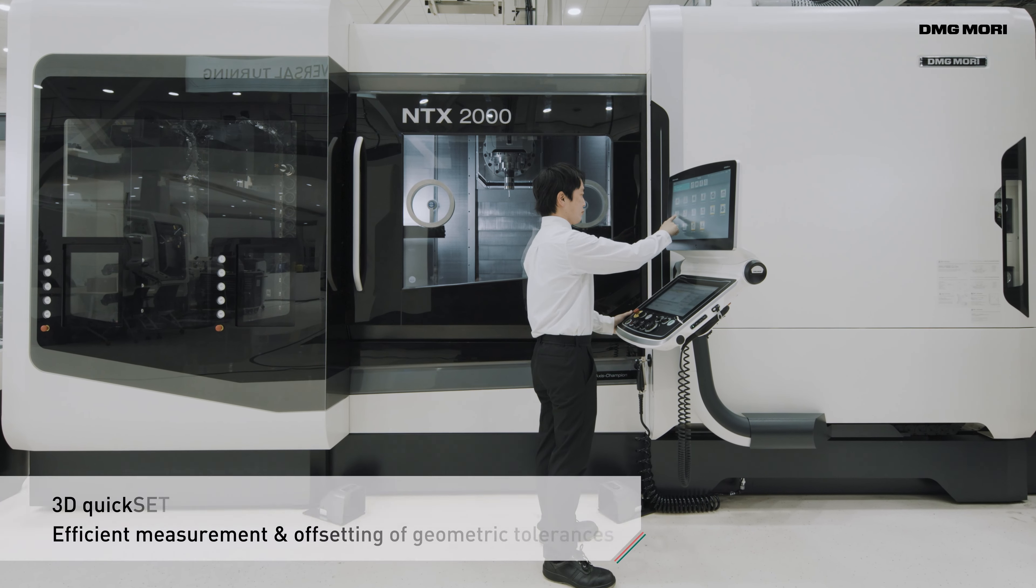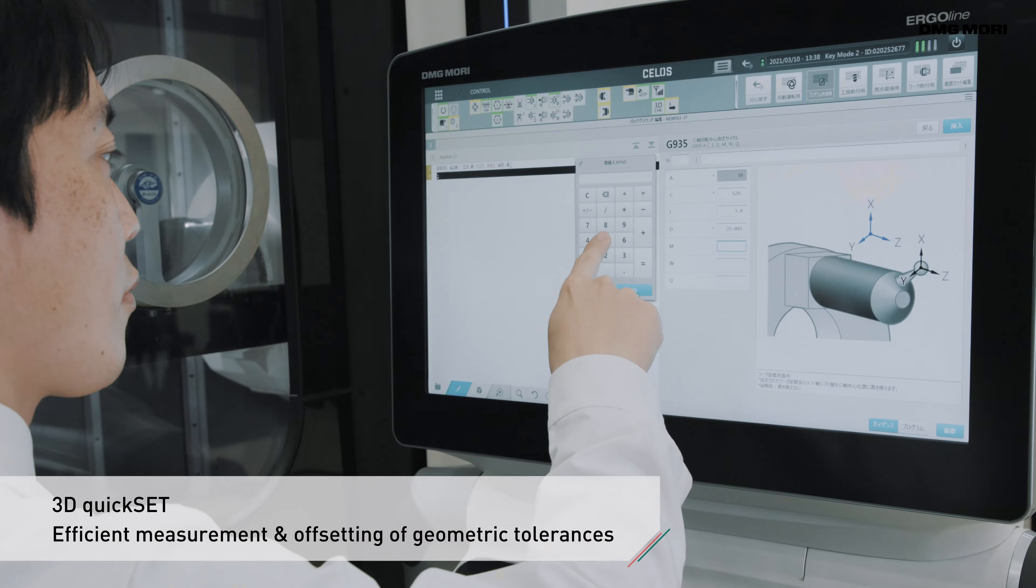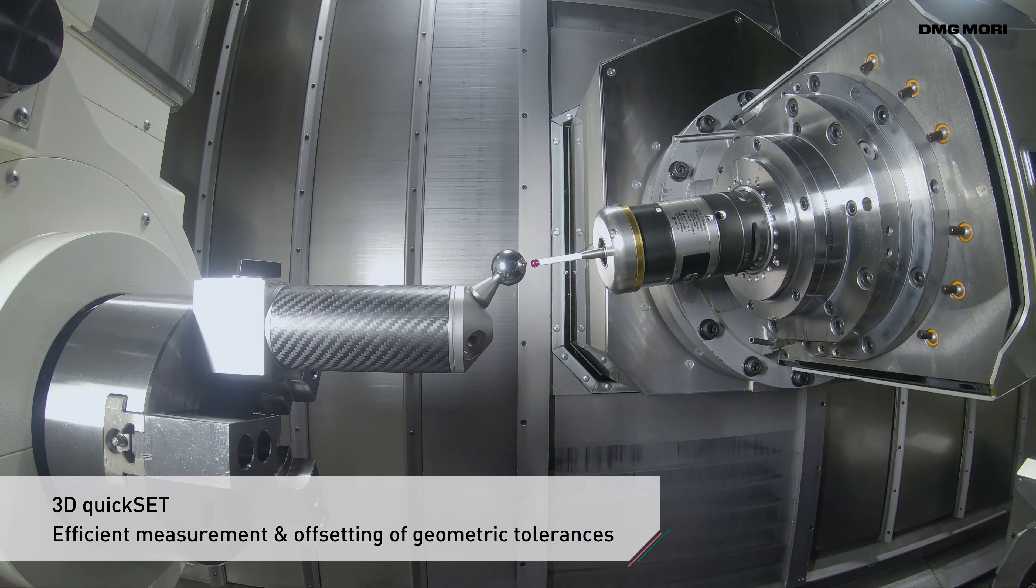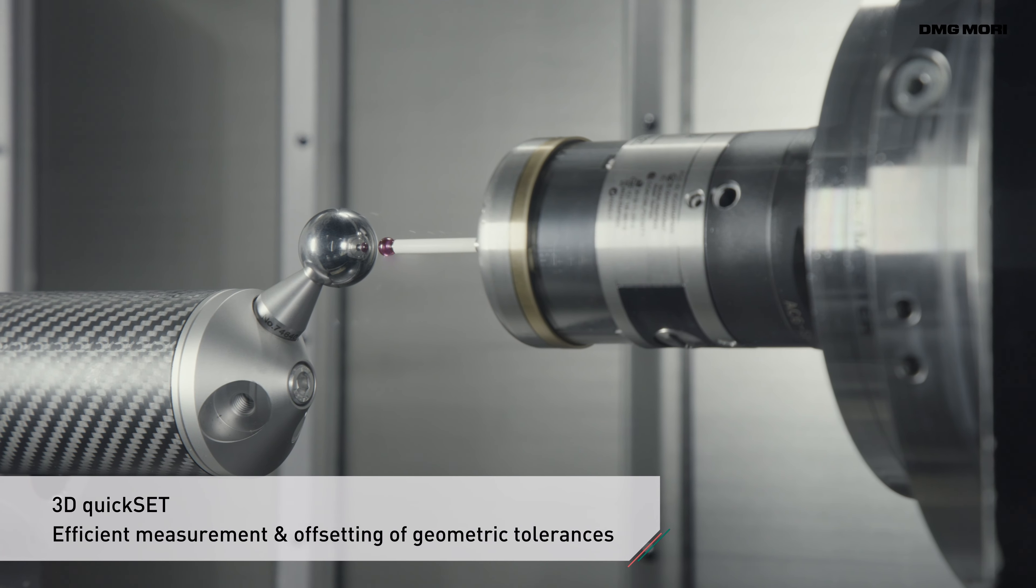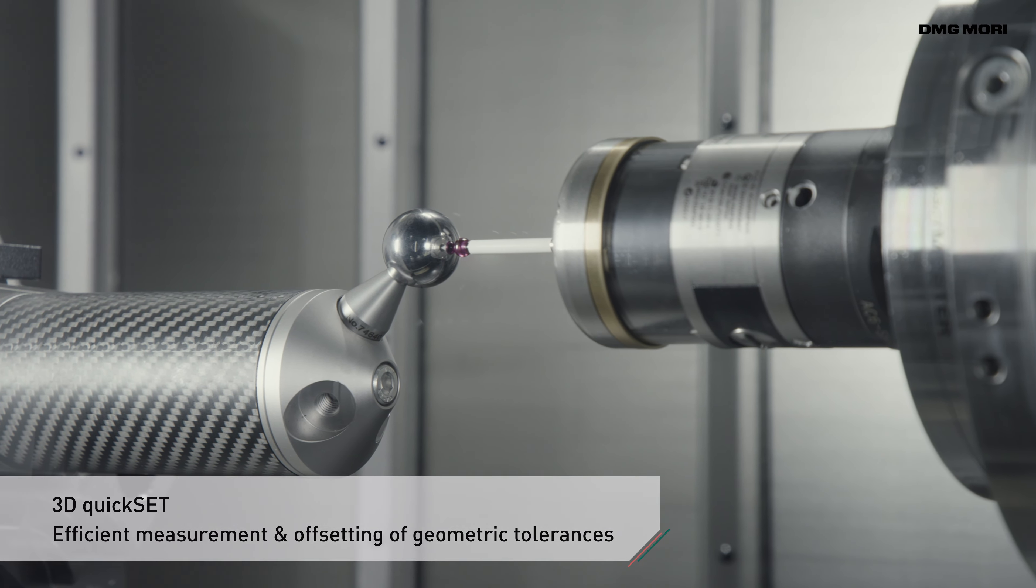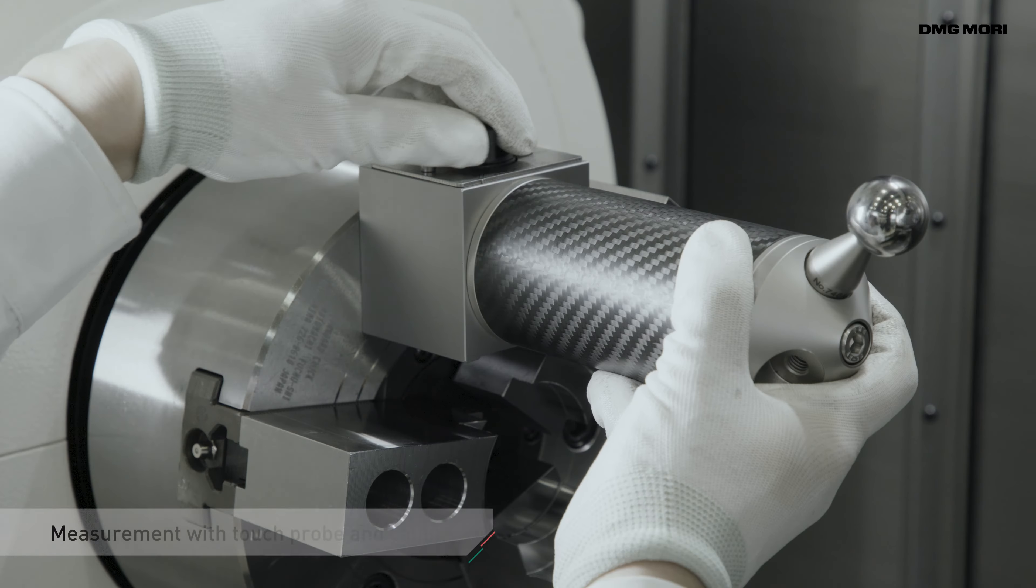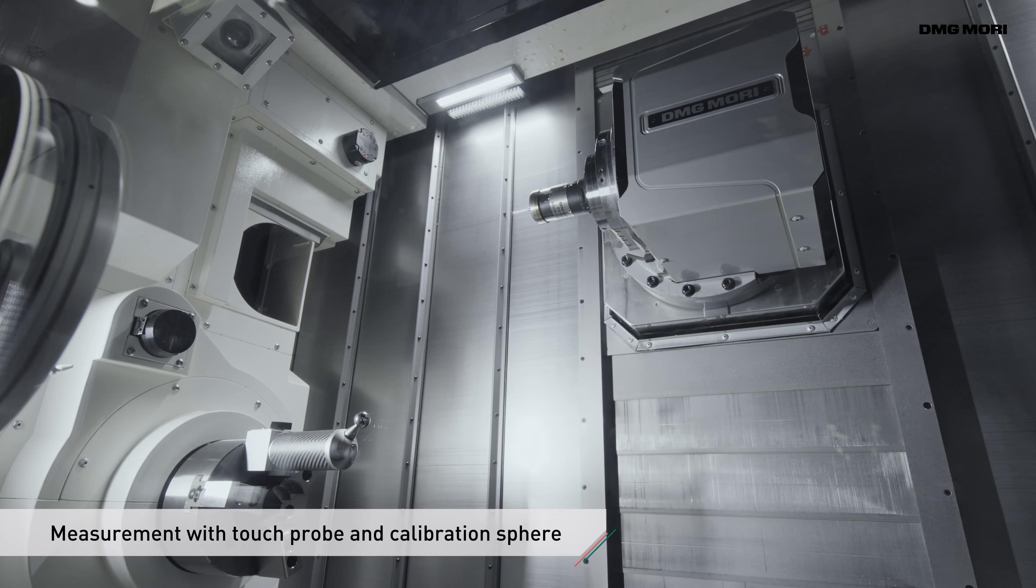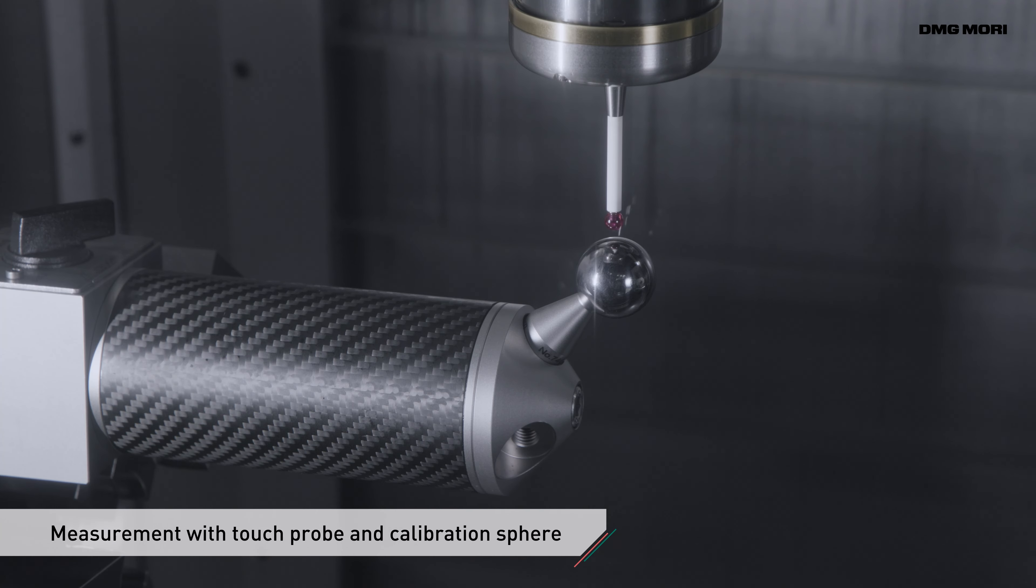So DMG MORI has developed 3D QUICKSET, a technology cycle that easily measures and offsets geometric tolerances without human error. 3D QUICKSET measures and offsets the tolerances of a rotary axis using a touch probe and a calibration sphere.